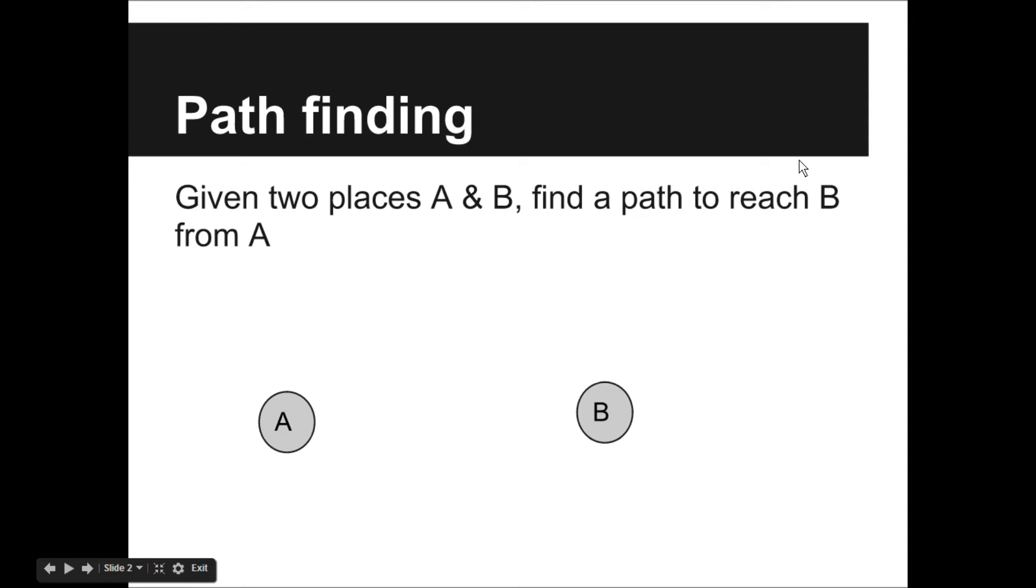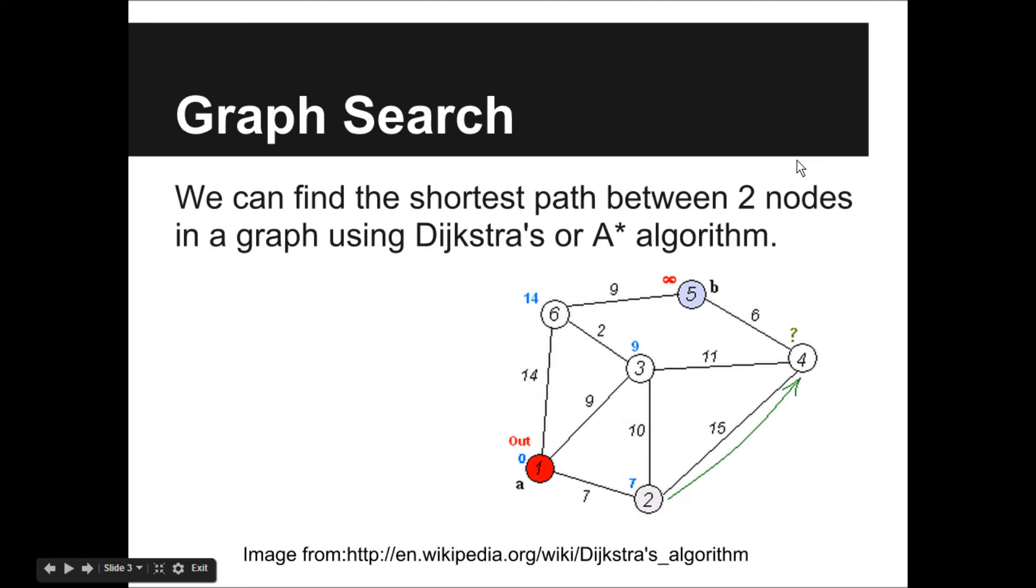First, a pathfinding problem is like this: given two places A and B, find a path from A to B. Then, we know if A and B are two nodes in the graph, we can run Dijkstra or A-star to find the path.